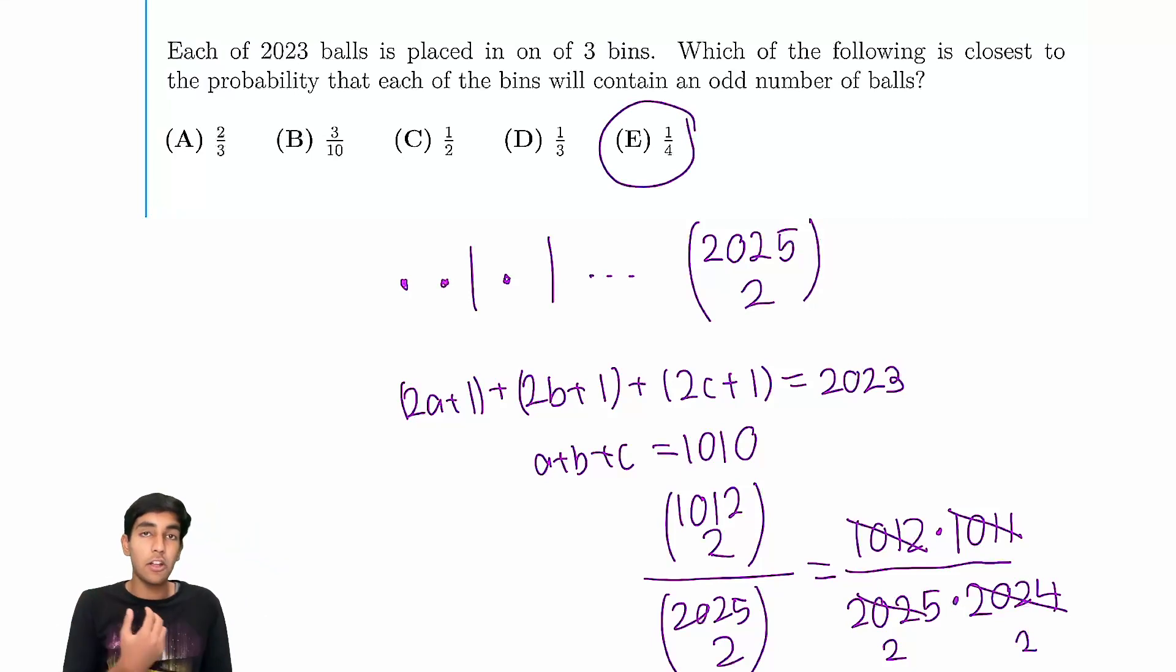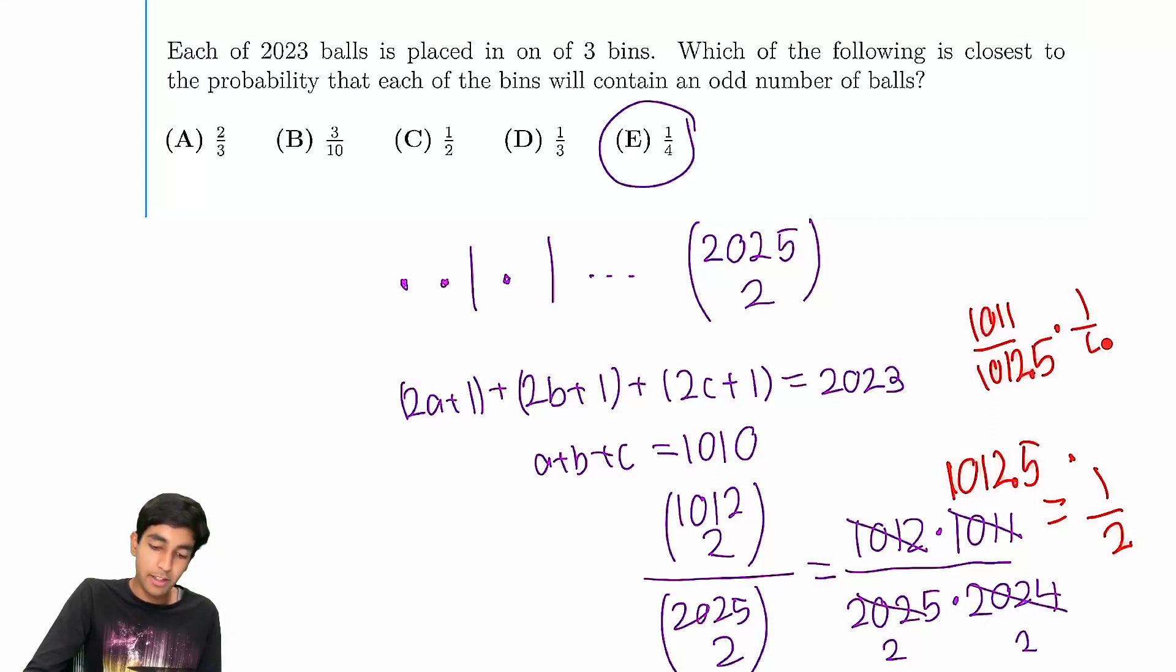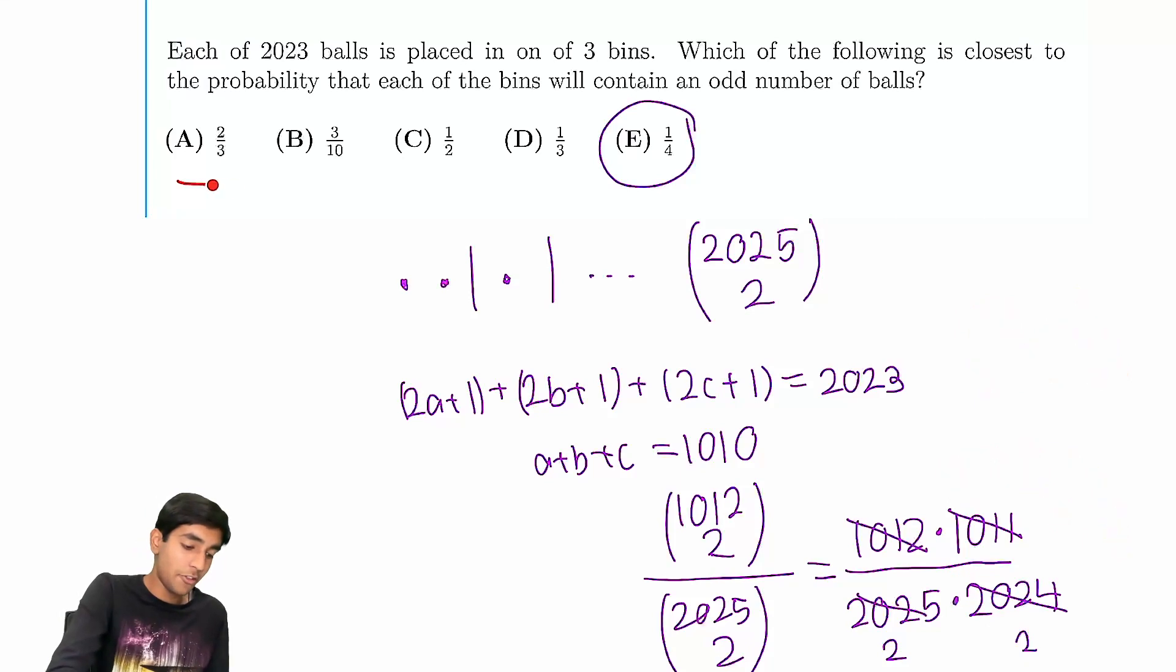And the reason why we can make such bold approximations, or maybe a better way to do this would be realizing that this cancels with this to get 2. And then this is a little bit less than half, but very slightly less. Because if you think about it, 1012.5, this would be equal to half exactly. And this is 1011 over 1012.5 times 1/4, basically would be our exact answer. And this is so very close to 1/4 and none of these other choices even come close.